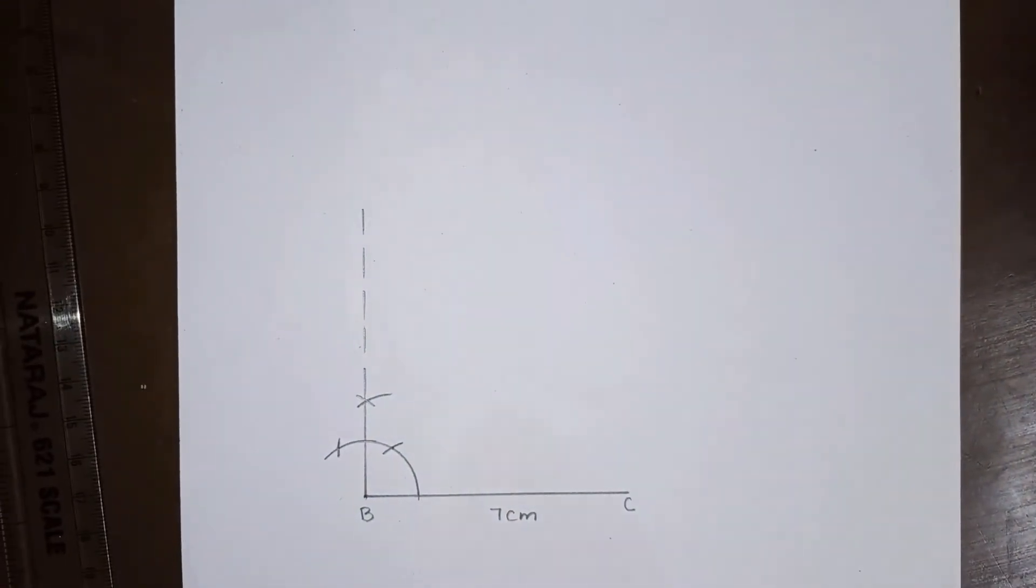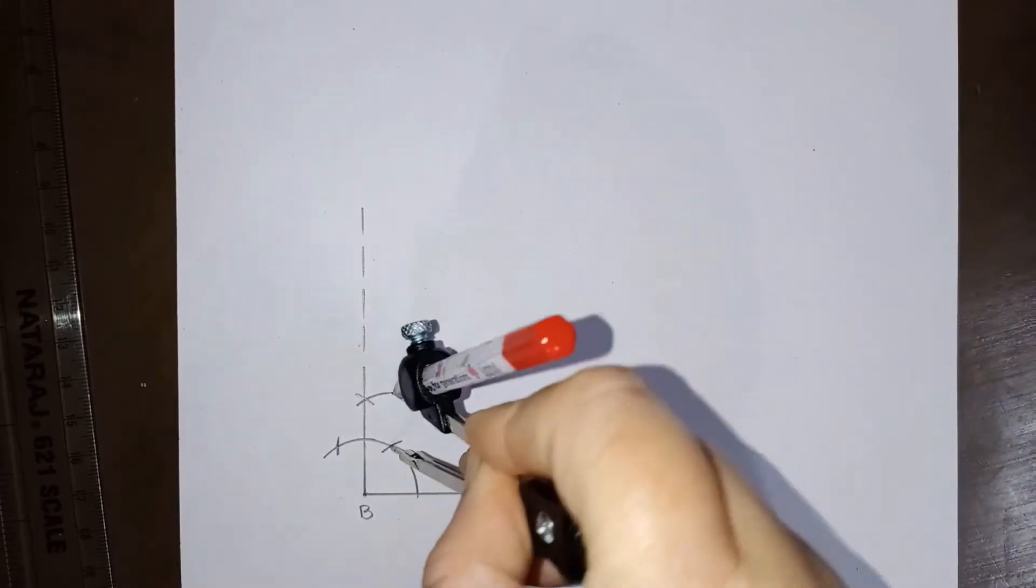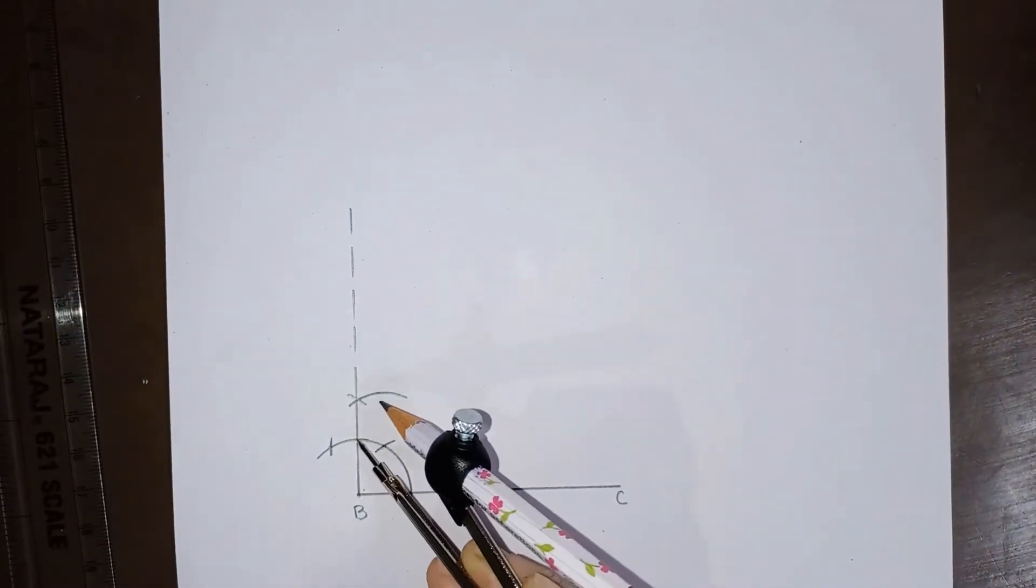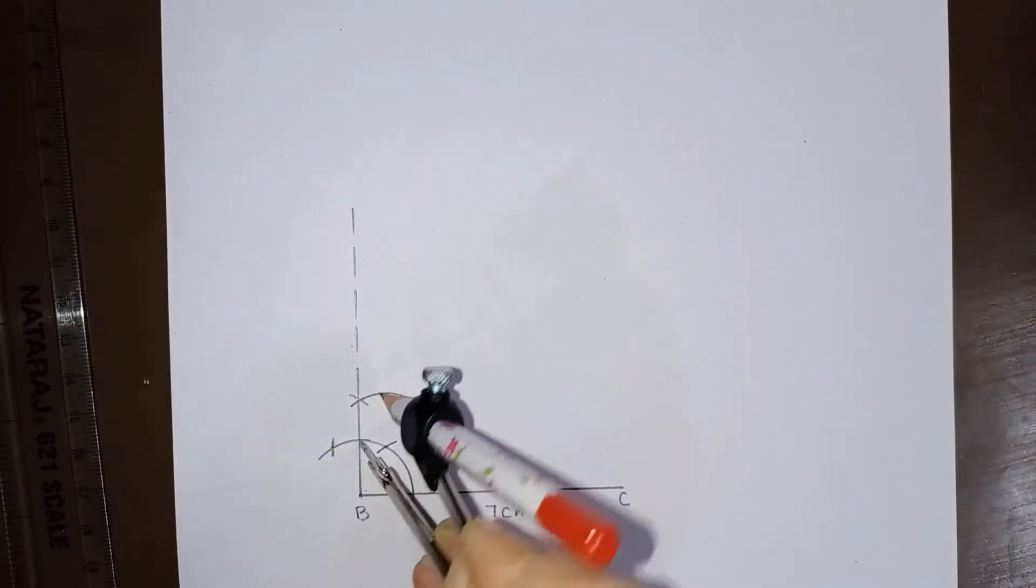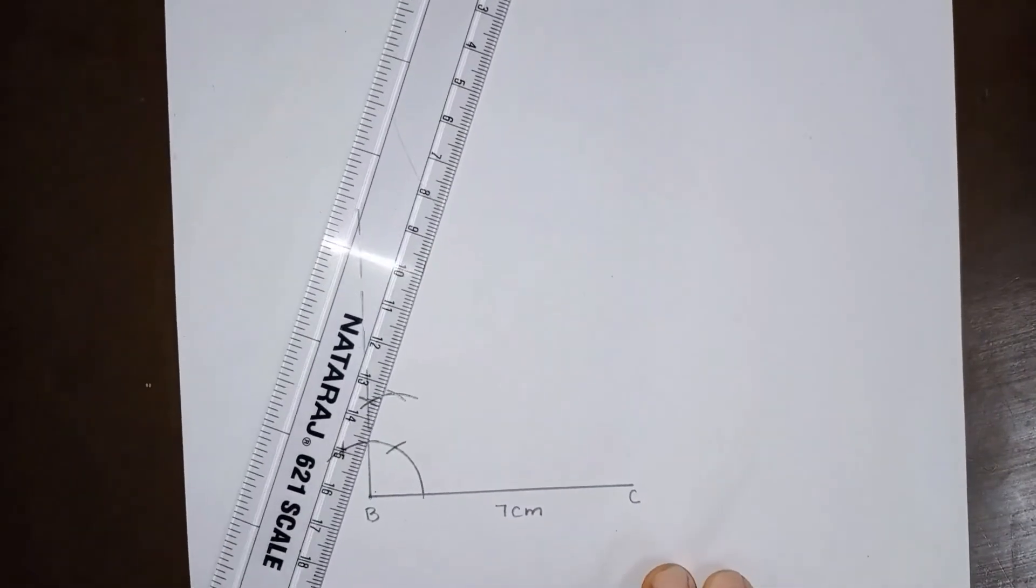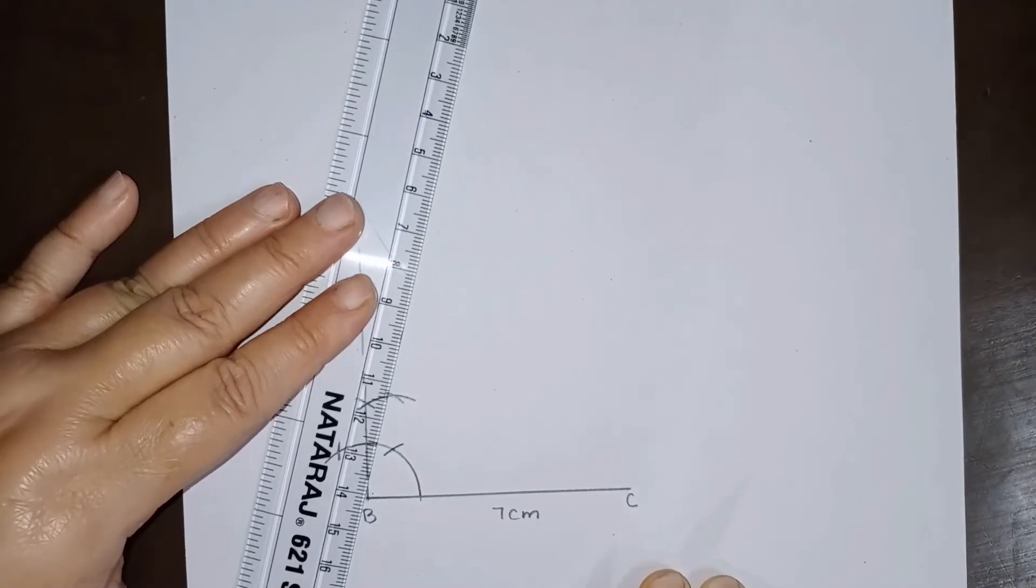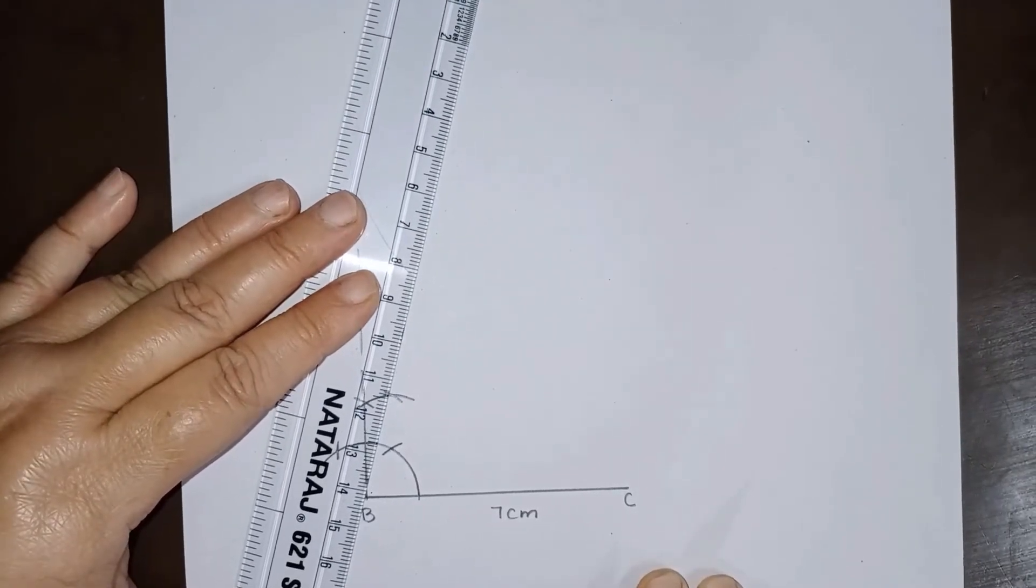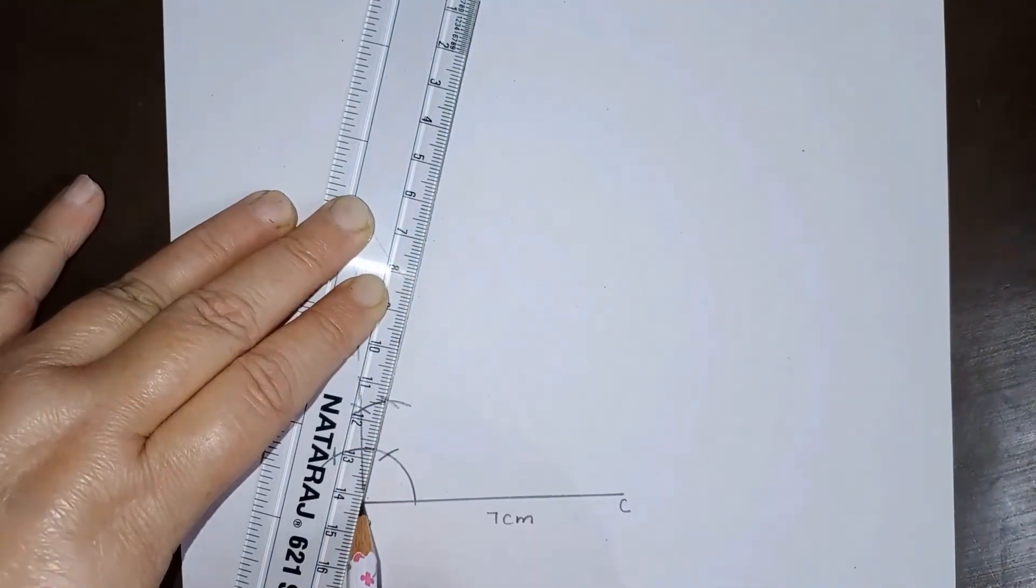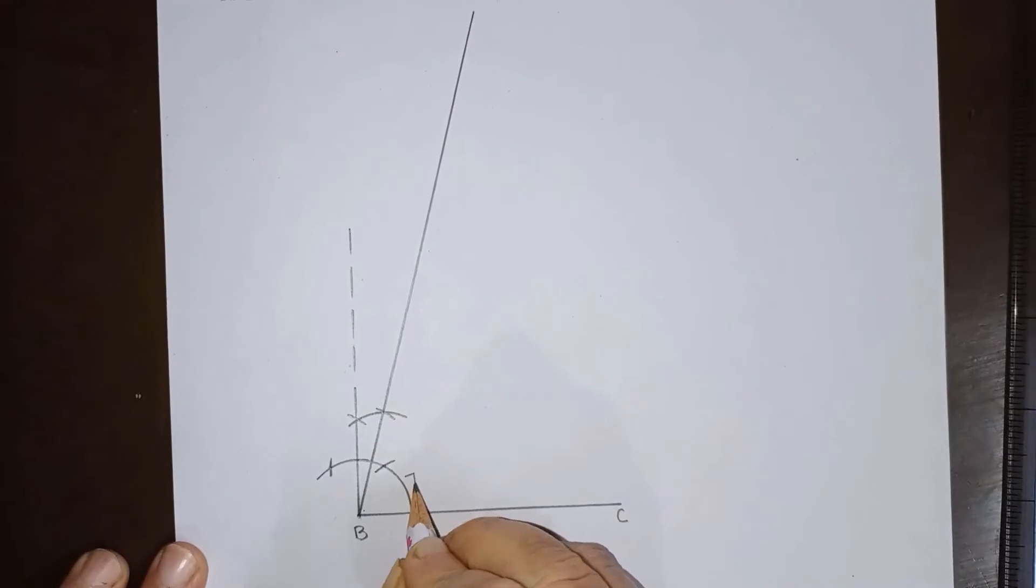Now 75 degrees lies between 60 and 90. So this is 60. So we will draw an arc from here. So this angle will be angle of 75 degrees. So we will draw it like this. We will join and this we will get an angle of 75 degrees at B.